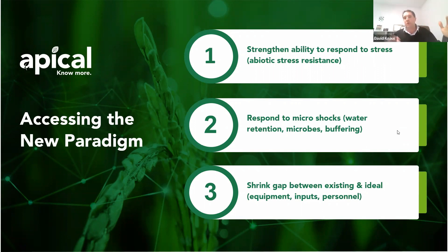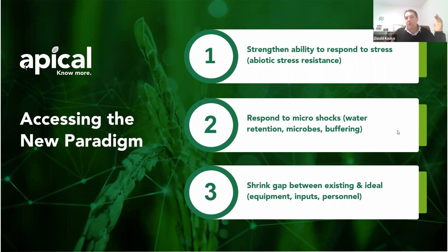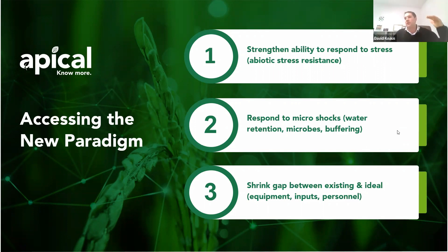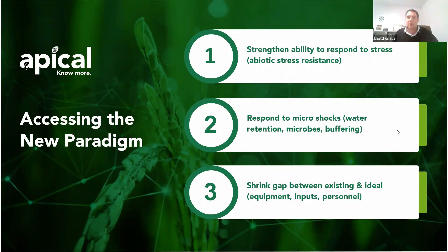We shrink that gap through equipment, inputs, personnel, knowledge, education — the list just goes on and on. You start with saying, okay, what would be optimal if we're making X amount of dollars, we've got X amount of acres, we're producing X amount of crops, and then you say where you are today and start to shrink that gap.